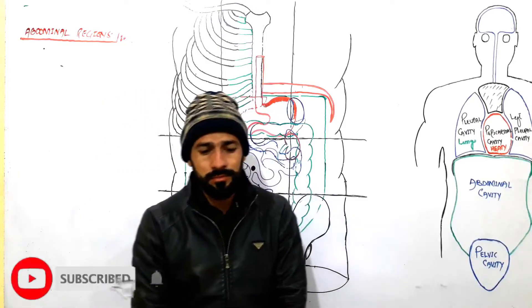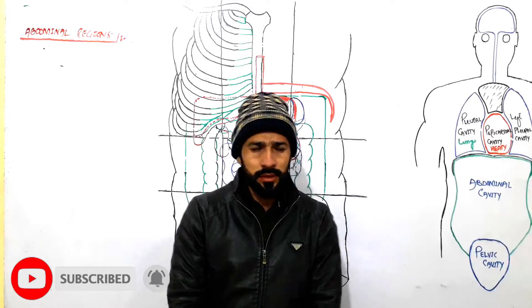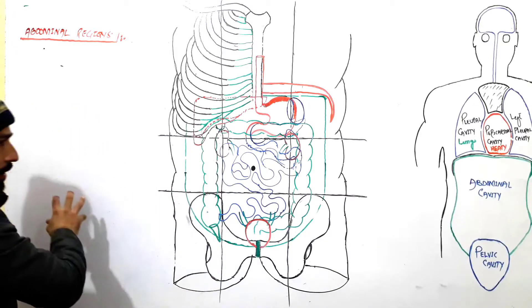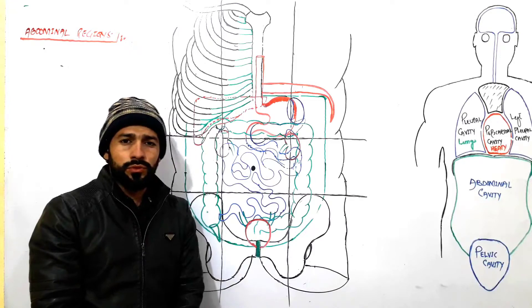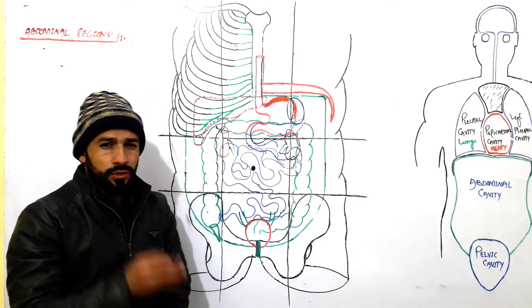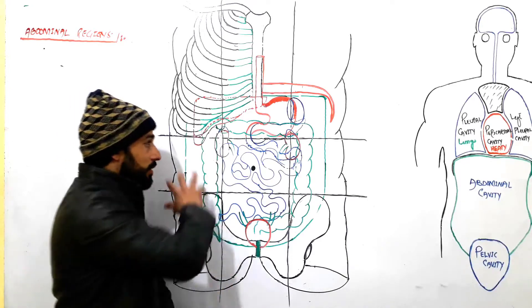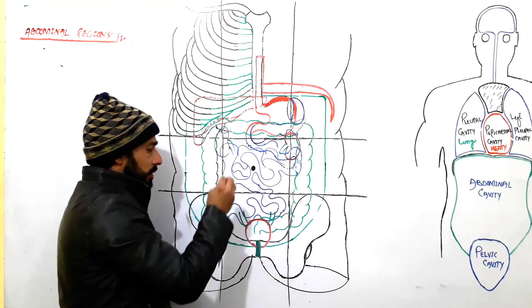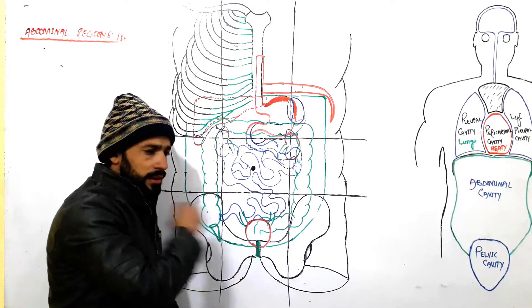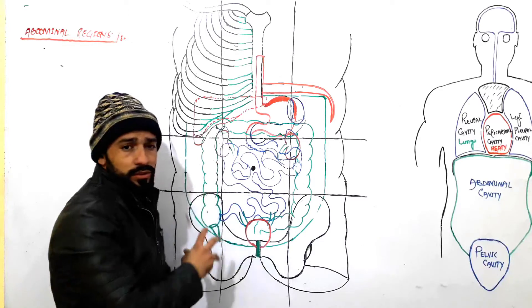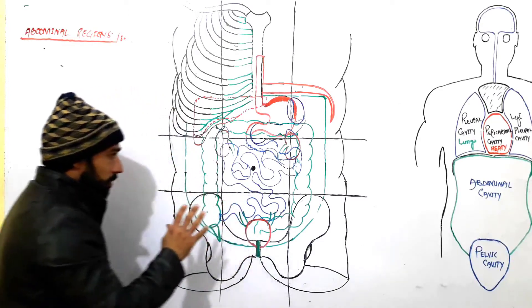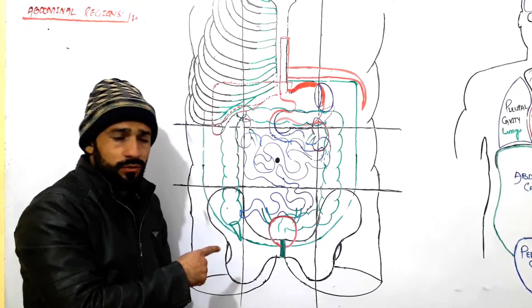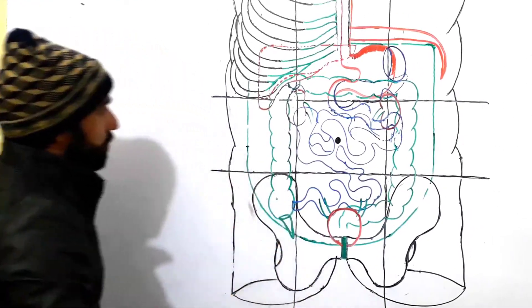Hello my dear friends, assalamualaikum. We had told you that we will discuss the abdominal regions. In the previous video I had divided the abdomen into nine different regions — please go and watch that lecture to clear your confusions regarding this diagram. It's a little complicated, but by the end of this lecture we will have a clear concept of what organs are present in which regions of the abdomen.